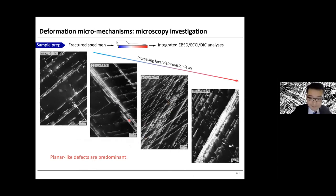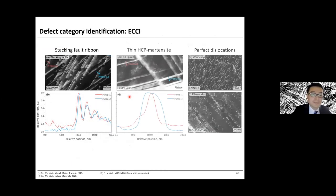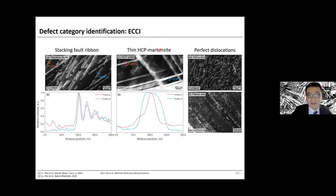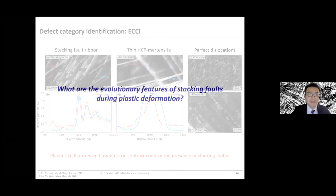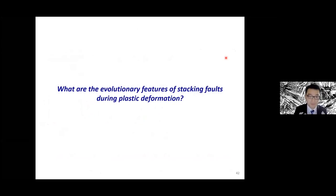These planar-like features show asymmetric contrast on one end and decaying contrast on the other. By comparing the ECCI contrast between what we observe in this material, blocky HCP martensite, and perfect dislocation glide, we conclude that this material indeed forms planar-like features with anti-symmetric and asymmetric contrast, confirming extensive stacking fault formation by plastic straining. This leads to a further question: what are the evolutionary features of stacking faults during plastic deformation?